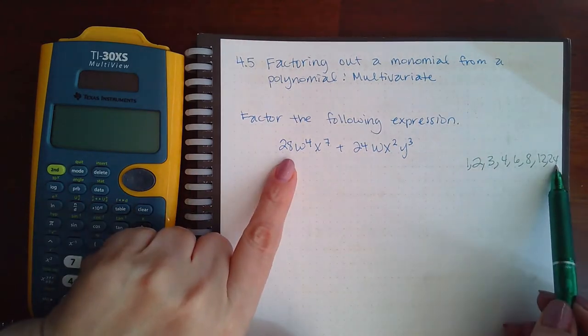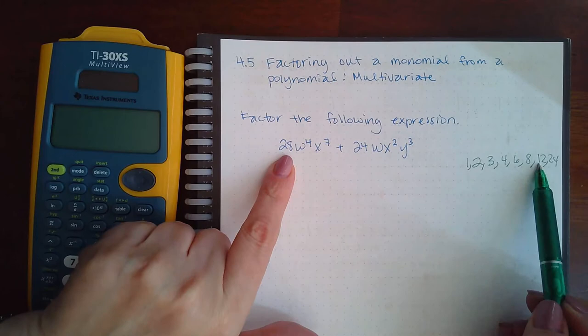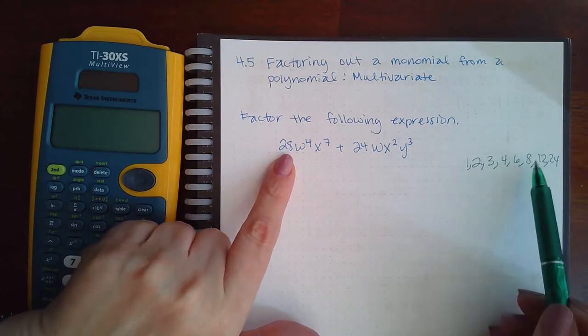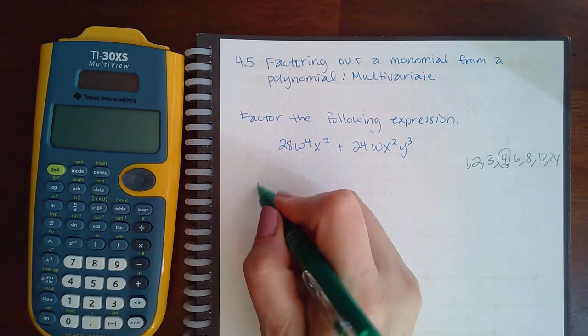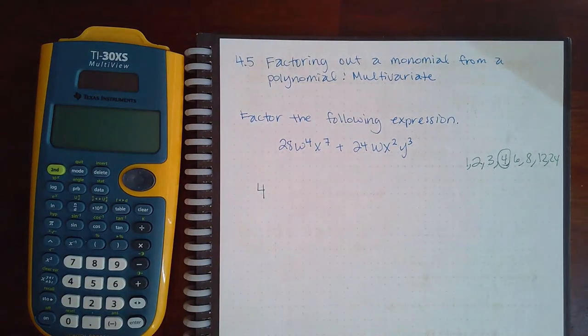28 cannot be divided by 24, cannot be divided by 12, cannot be divided by 8, cannot be divided by 6. It can be divided by 4. So 4 is going to be my GCF for the number part.